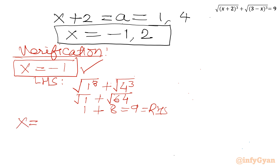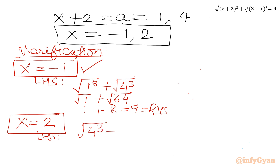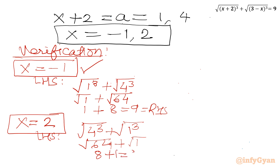For x = 2, the LHS is: √((2+2)³) + √((3−2)³) = √(4³) + √(1³) = √64 + √1 = 8 + 1 = 9 = RHS. So x = 2 is also verified.